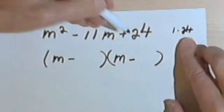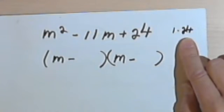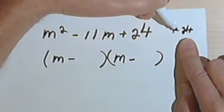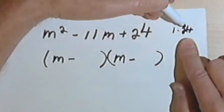So I could make a 24 with a 1 and a 24. Of course there would be negative 1 and negative 24. I'm just not bothering to write the negative. But I have to be able to add them together and get to a negative 11. And since 1 plus 24 is 25, that's not going to work.